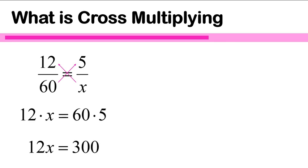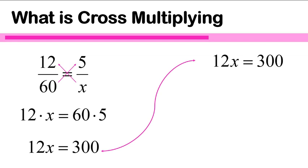So 12 times x gives me 12x, and 60 times 5 is equal to 300. I have the equation 12x equals 300. This is a one-step multiplication equation. My variable is x, and 12 is being multiplied times x. So to get x by itself, I'm going to divide both sides of the equation by 12, leaving me with x on the left, and 300 divided by 12 gives me 25. Those are the steps for solving a problem using cross-multiplying.